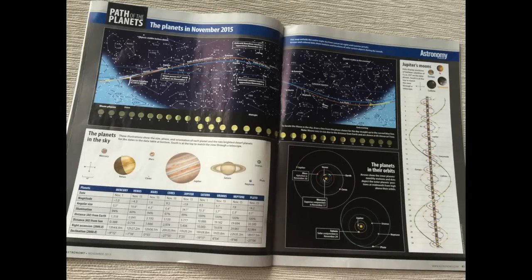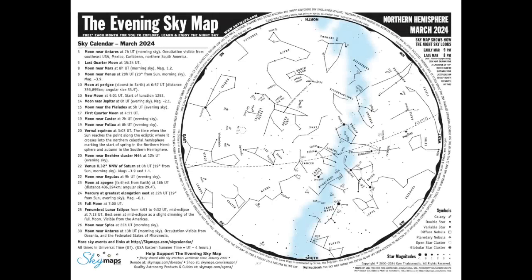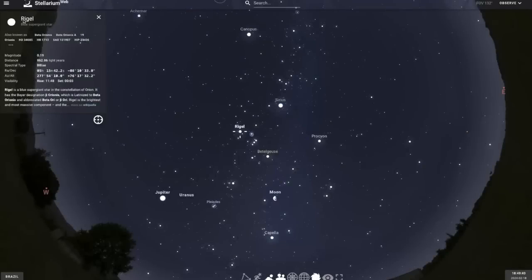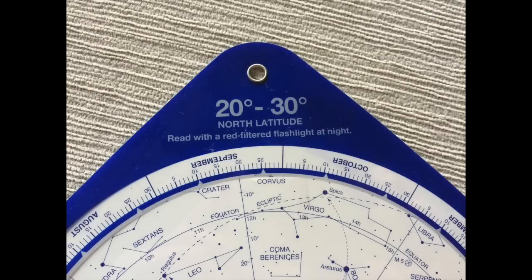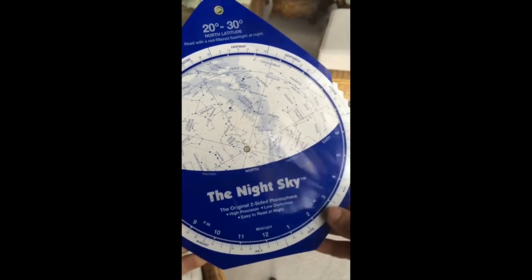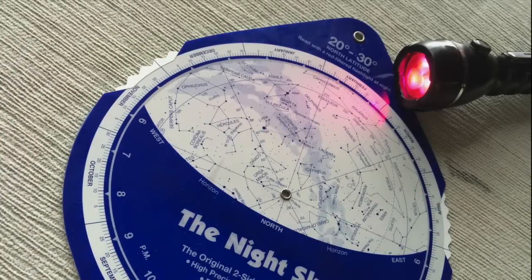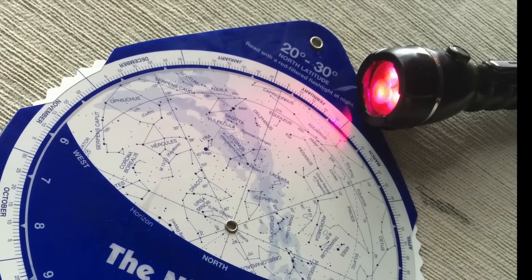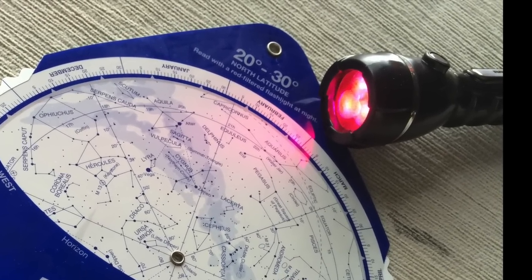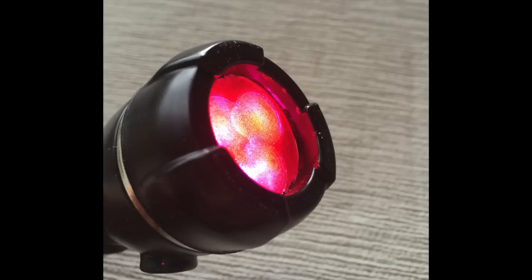You can use websites such as SkyMaps.com to download maps for your specific location and month, or use an online planetarium such as Stellarium. Your star chart should match your specific location — when observing from Hawaii, for example, the chart should match that latitude. If you take a planisphere outside, I recommend using a red flashlight or red filter to preserve your night vision while reading the chart in the dark.